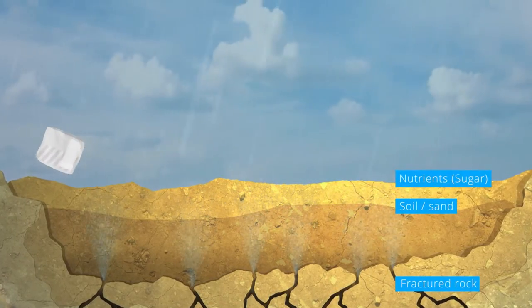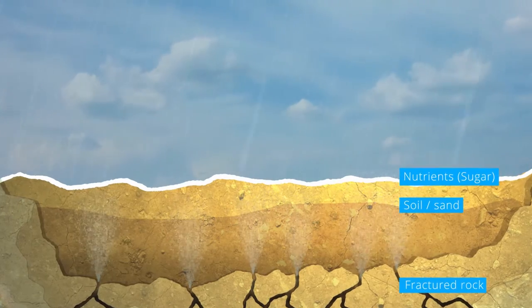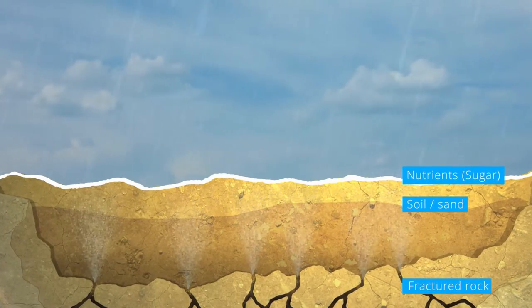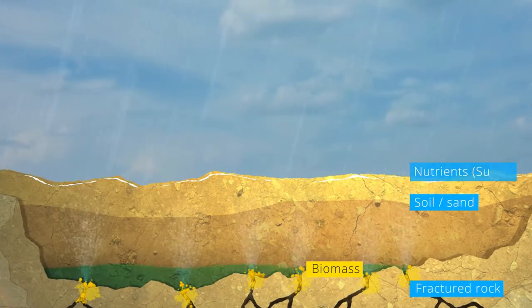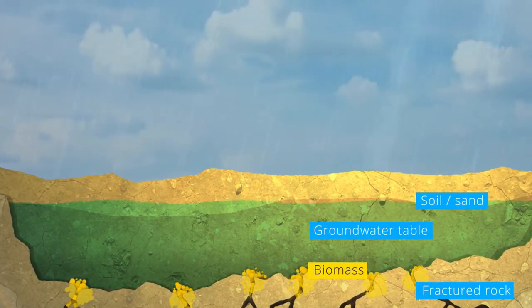While it rains, nutrients are added at the surface. The flow transports the nutrients towards the fractures where biomass is created. The fractures are clogged, implying a groundwater table is formed on the topsoil layer.